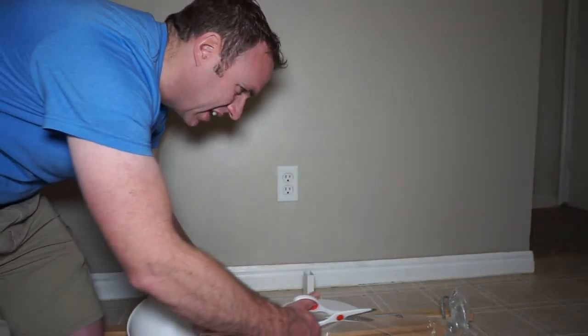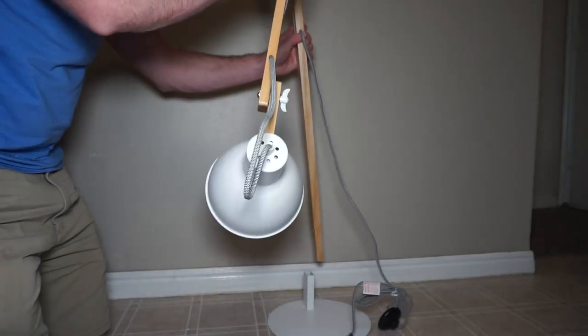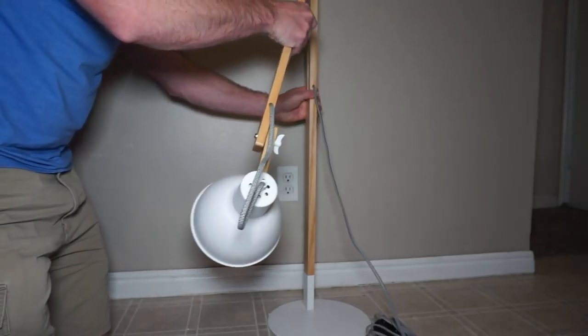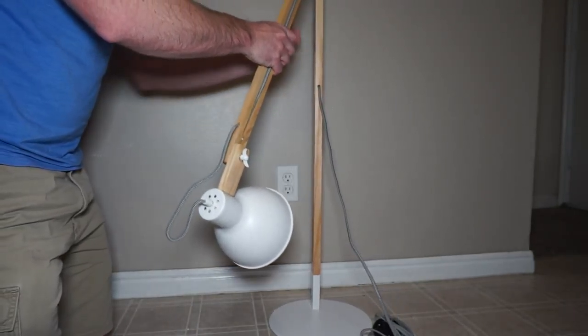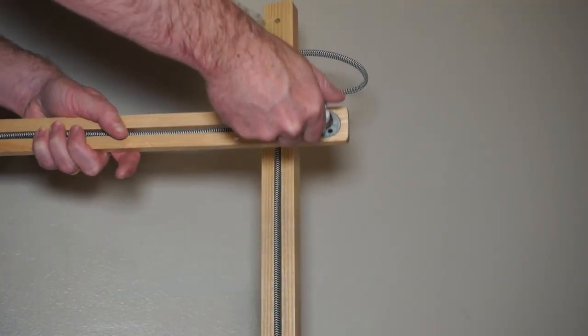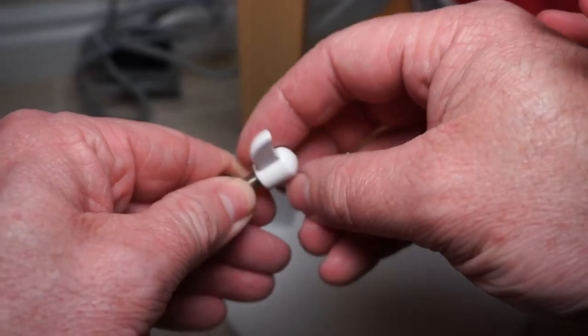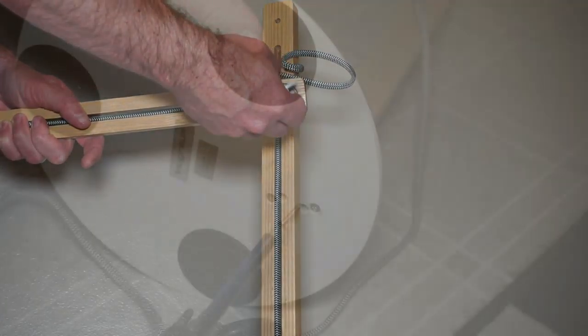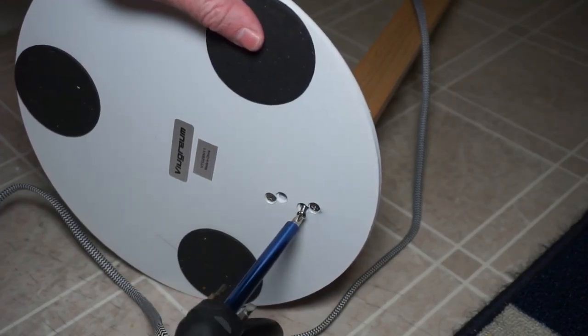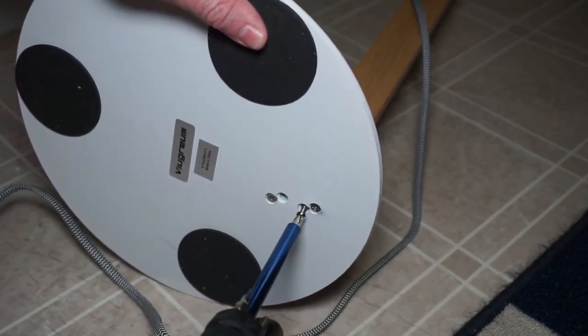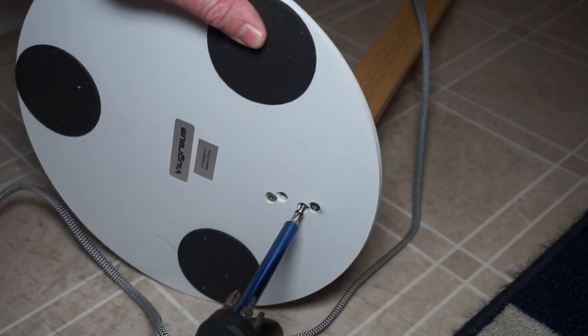Assembly is really easy. You don't need any tools because it comes with finger wing nuts that you can just screw together. There are two screws on the bottom that you will need a Phillips head screwdriver for if you decide to put those in, which I did.